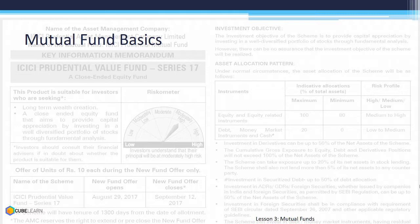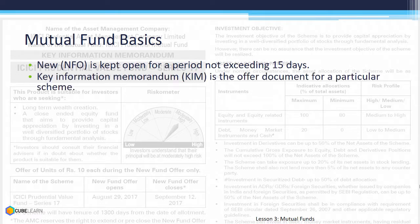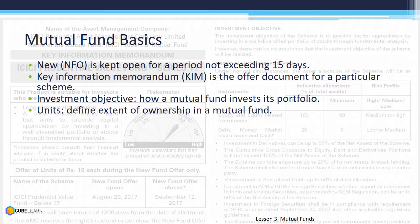An NFO is kept open for a period of 15 days. KIM, which we saw in the screencast, is an offer document for a particular scheme and mentions its investment objective. Units define the extent of ownership in a mutual fund.